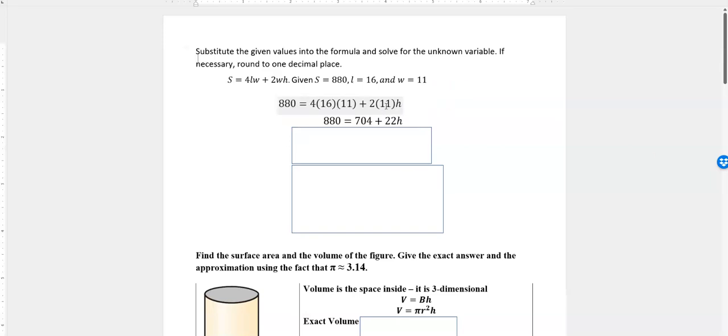To do that, we take our equation as given. Where we see S goes 880, the 4 was given in the equation, L was 16, W was 11, the 2 was given. Again, W is 11, and we don't know what H is. To start off, we simplify what we can.